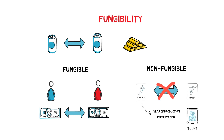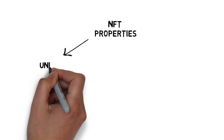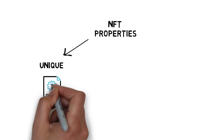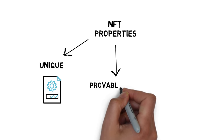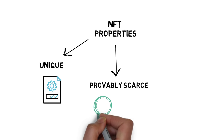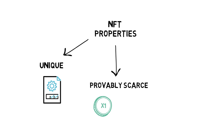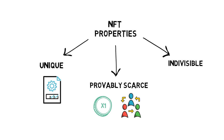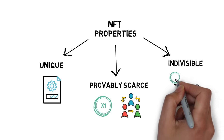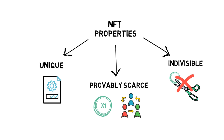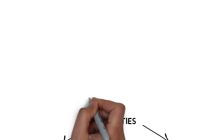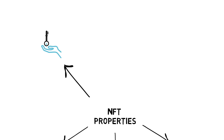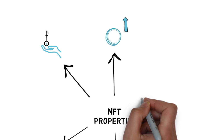Now that we know what non-fungible actually means, let's see what the most common properties of NFTs are. Unique: each NFT has different properties that are usually stored in the token's metadata. Provably scarce: there is usually a limited number of NFTs, with an extreme example of having only one copy — the number of tokens can be verified on the blockchain. Indivisible: most NFTs cannot be split into smaller denominations, so you cannot buy or transfer a fraction of your NFT. Similarly to standard tokens, NFTs also guarantee ownership of the asset, are easily transferable, and are fraud proof.